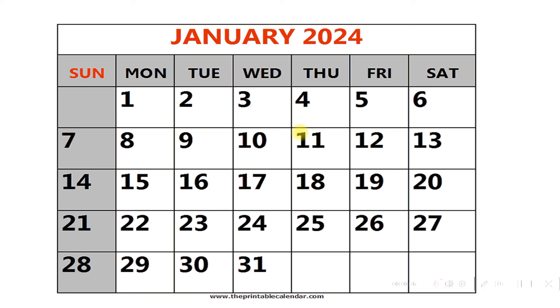Which month is it? Yes, January 2024. So in some calendars there will be days on this side — like Sunday, Monday — on this side, and you have to read vertically.